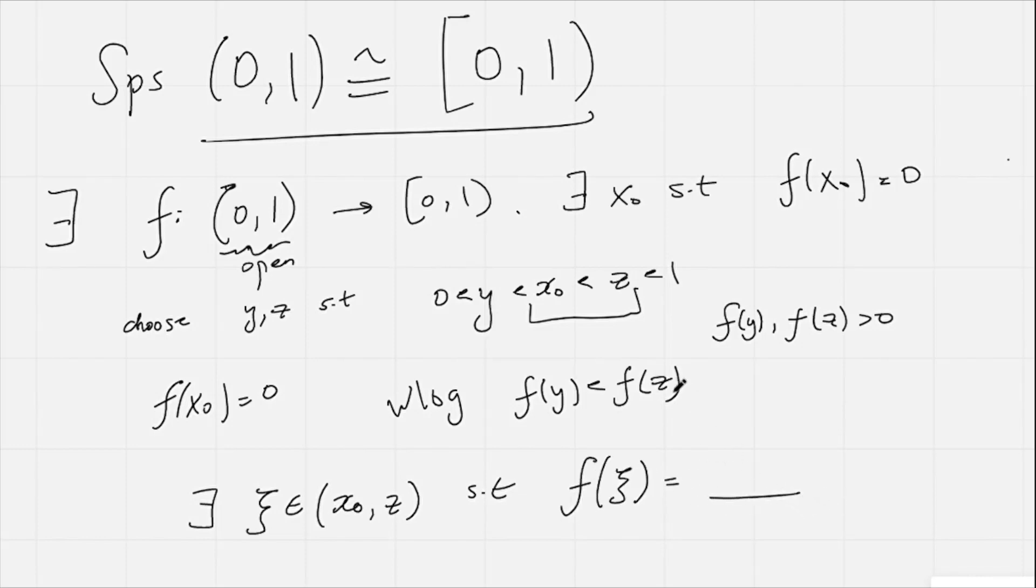And I can write any number here that's between f(x₀) and f(z). But I know f(x₀) is 0, and I know that f(y) is between 0 and f(z), so I'm going to say f(y) here. But now, hopefully you can see the issue.